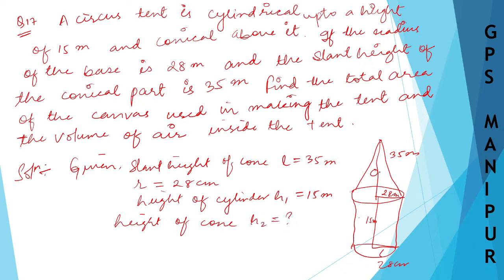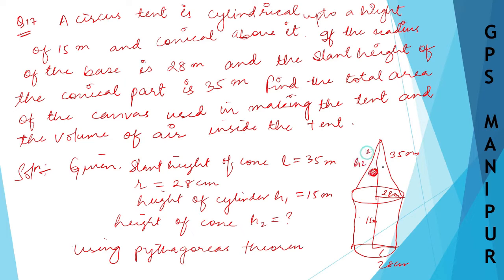We need to find the height of the cone H2, which is not given. Using the Pythagoras theorem: H2 squared = L squared minus R squared. So H2 = root over L squared minus R squared.